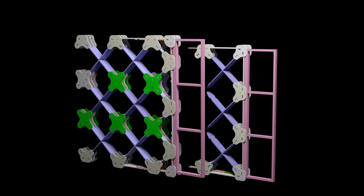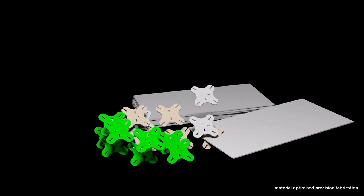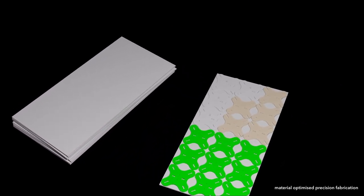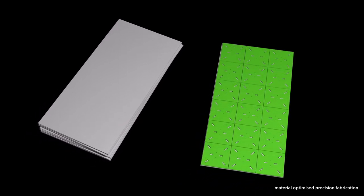Jointing members have been optimised for maximum strength while simultaneously using minimal materials. Although it appears as if this geometry produces more scrap material, waste is actually reduced by utilising the material more efficiently.